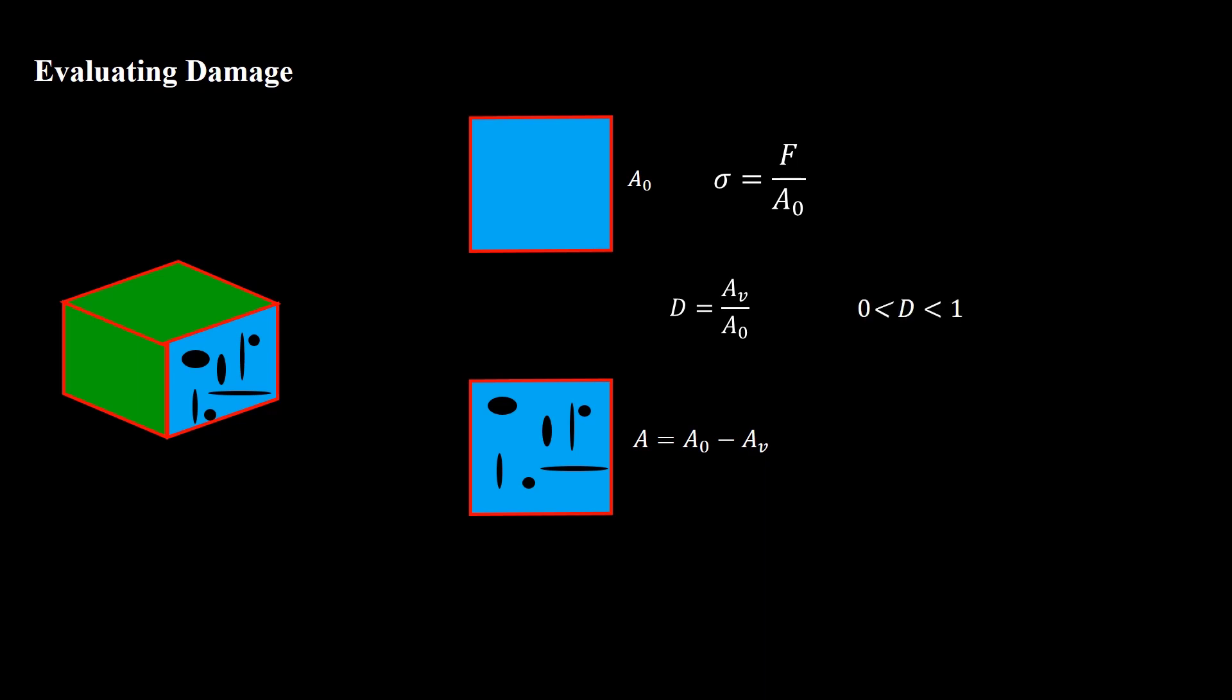This parameter is zero for a perfect material. As the voids form and grow, this parameter increases. When damage parameter reaches one, it means voids spread to all the area - in fact it means material fracture. The real stress which is applied to a damaged part can be calculated based on applied force and real area of the part. This stress can be related to the macro stress using damage parameter.